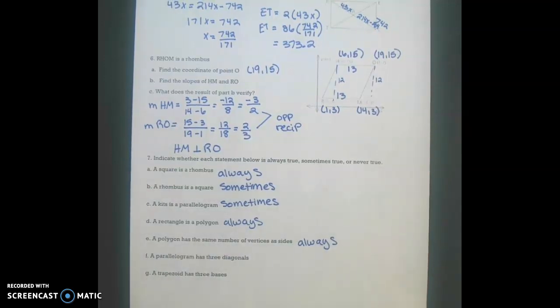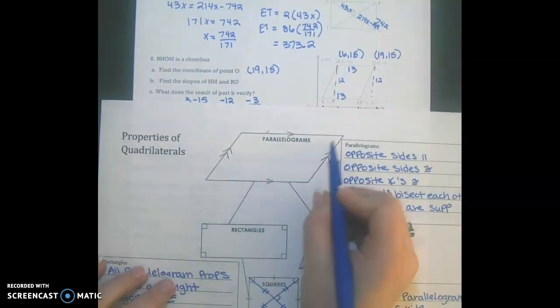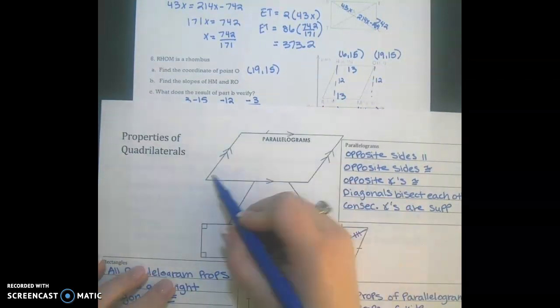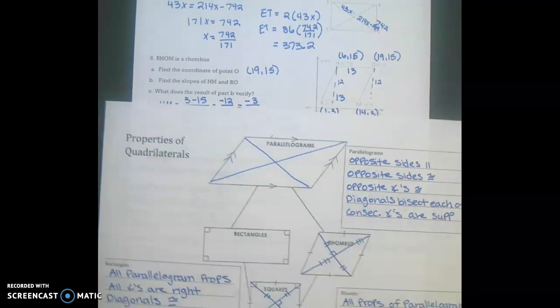A parallelogram has three diagonals. So now diagonals are drawn from opposite vertices. And a parallelogram only has two diagonals. So that one's going to be a never.